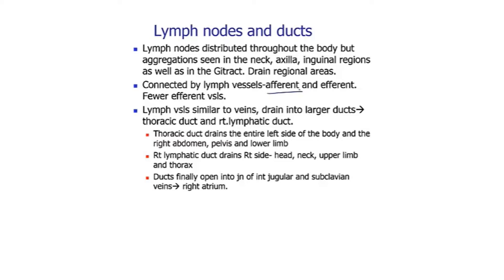Lymph vessels are similar to veins and drain into larger ducts — the thoracic duct and the right lymphatic duct. The thoracic duct drains almost the whole body except the right side. For the right side above the diaphragm, the right lymphatic duct drains the head and neck, upper limb, and thorax. These ducts finally drain into the internal jugular and subclavian veins, which drain into the right atrium.